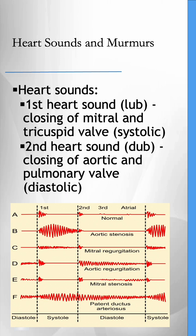When it comes to murmurs and pathology there are two main pathologies we need to know. The first is the classic ejection systolic murmur, which can be heard in all of the regions but most profoundly in the aortic valve region.